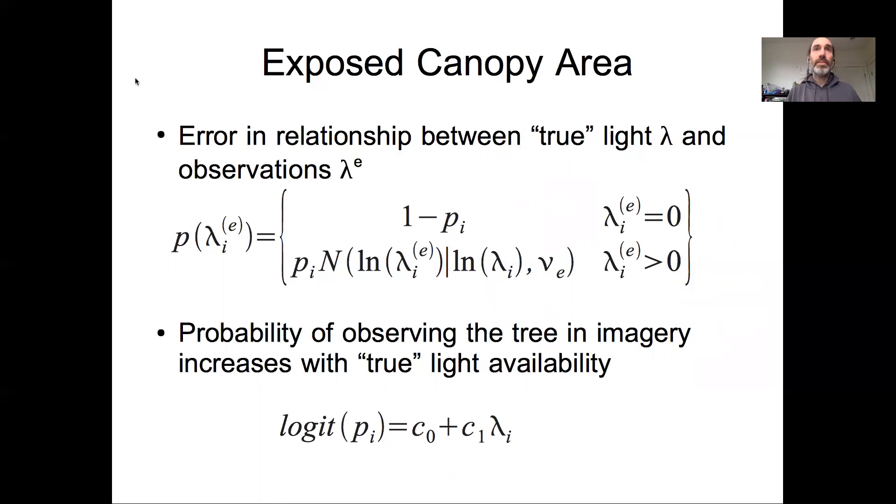So for the remote sensing, the exposed canopy area, we had this relationship between the true light lambda and the observed, that true light lambda being a latent variable. And the observed canopy area was this logit model on the true light, the binomial, and then this log-log linear model. In this case, we're treating the exposed canopy areas the closest to the truth.